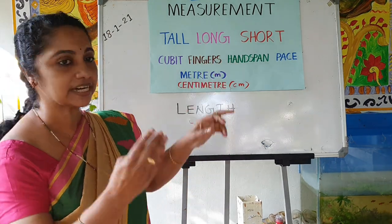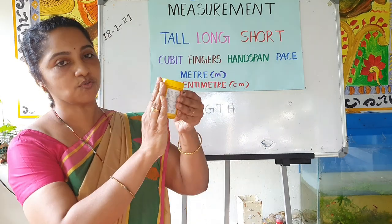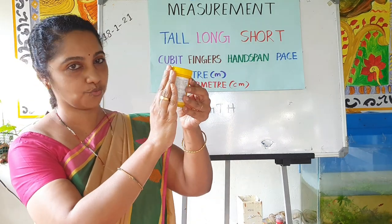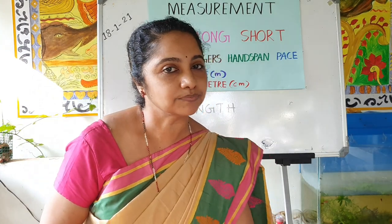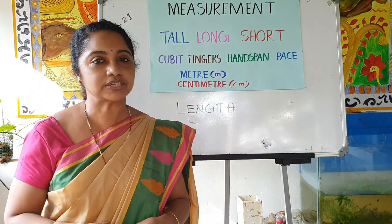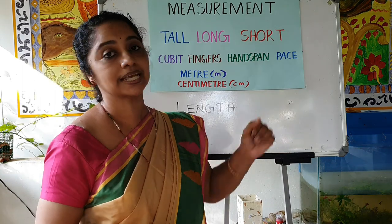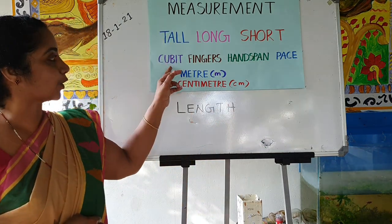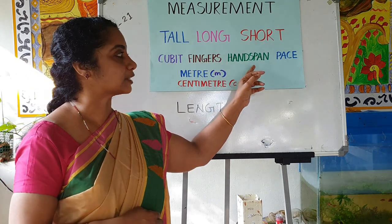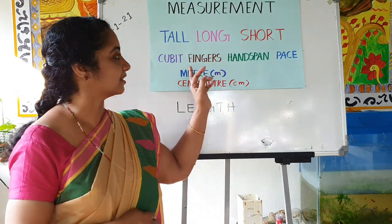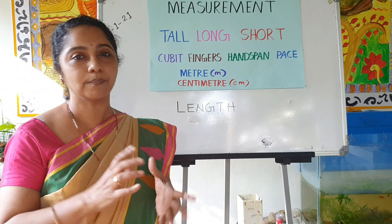And fingers — take this bottle. This is one finger length. And we can measure using our feet also. That is known as pace. So: cubit, fingers, hand span, and pace — these are some measurements we take using our body parts.